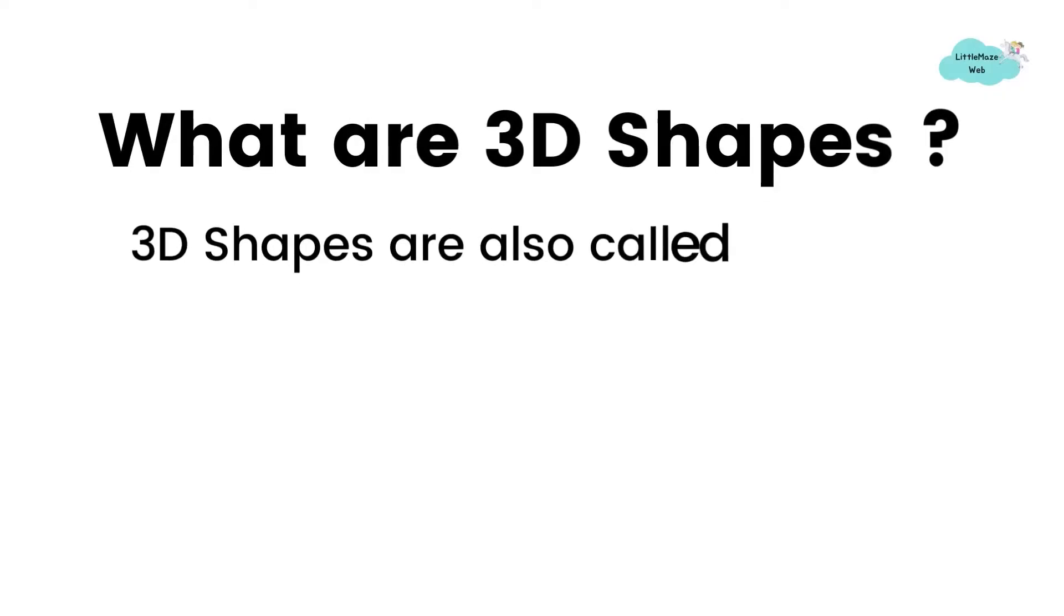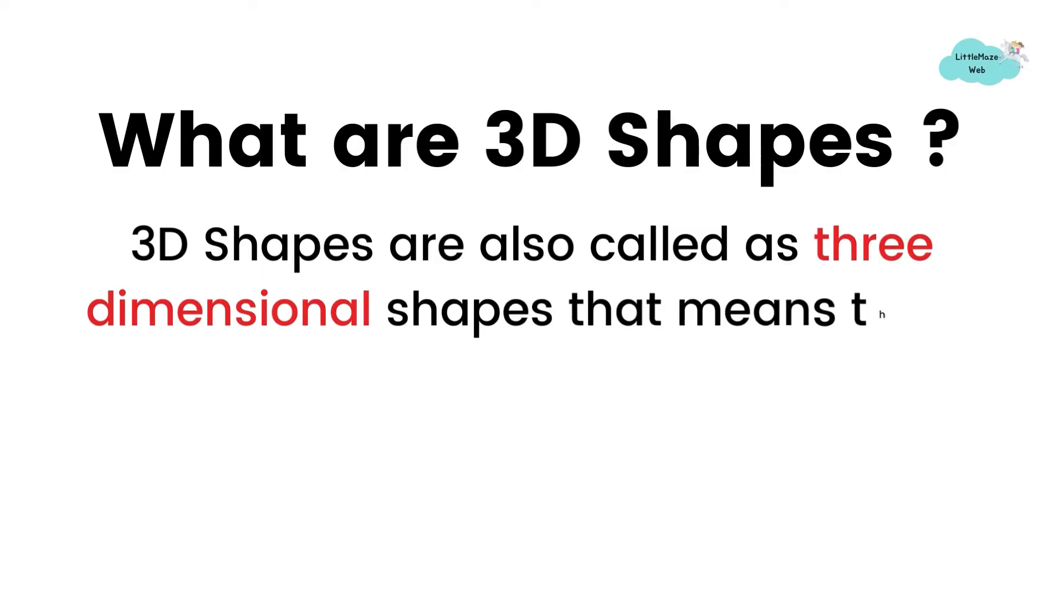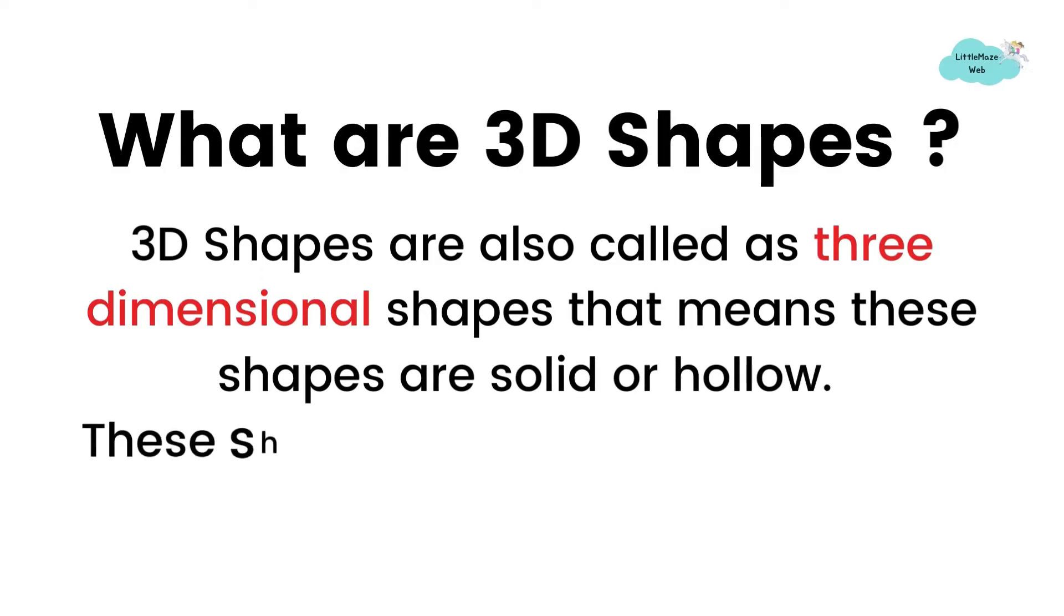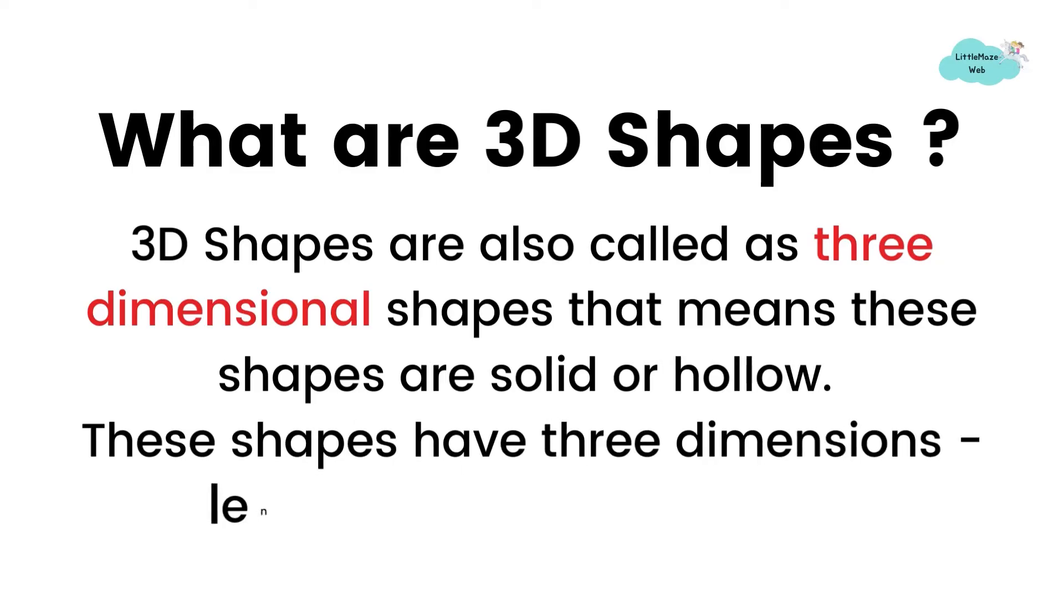First we need to know what are 3D shapes. 3D shapes are also called as three-dimensional shapes. That means these shapes are solid or hollow. These shapes have three dimensions: length, breadth and height.